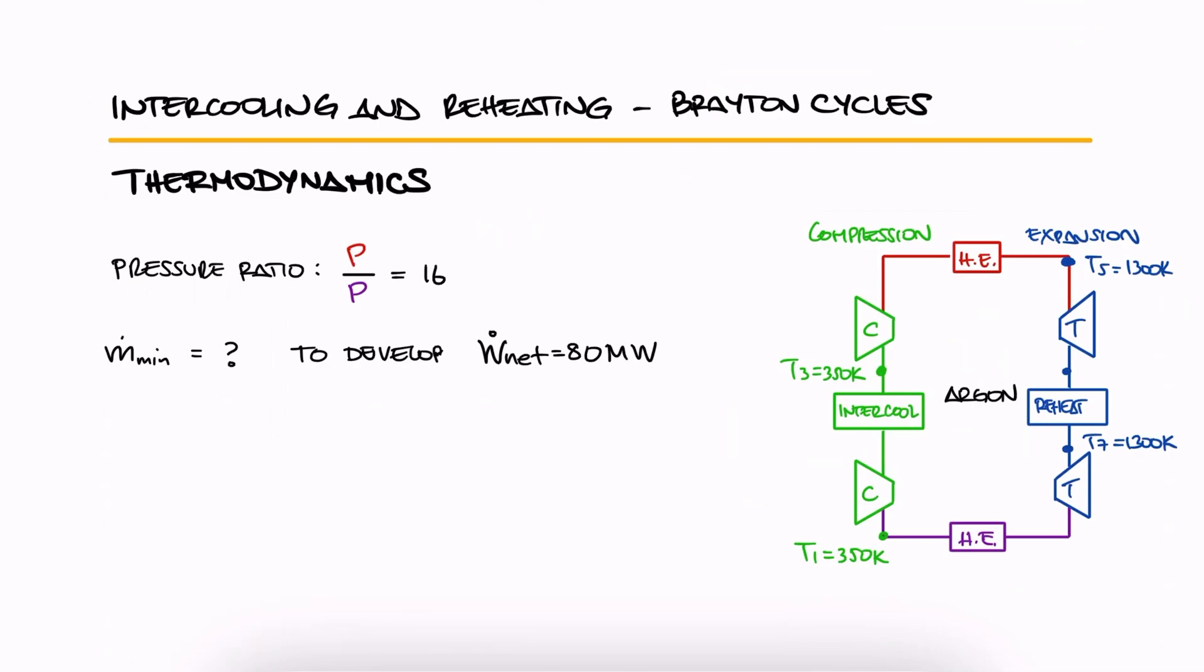Since we want to find the mass flow rate given the net power output, we write an expression that relates the two. We know that the power is equal to the specific work times the mass flow rate, which allows us to solve for the mass flow rate. The net specific work is equal to the work that the turbines produce minus the work that the compressors use.